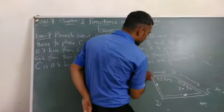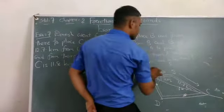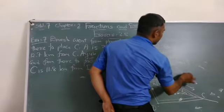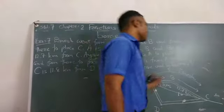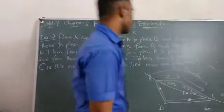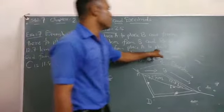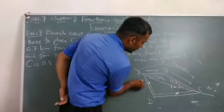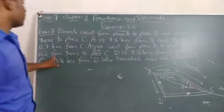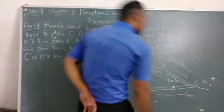Again, Ayub went from place A to D, and from there to place C. D to C.